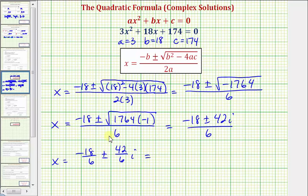Well, negative 18 divided by 6 equals negative 3. So we have negative 3 plus or minus 42 divided by 6 equals 7. So we have plus or minus 7i.